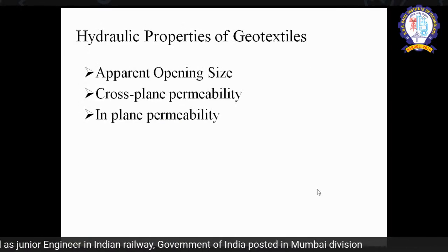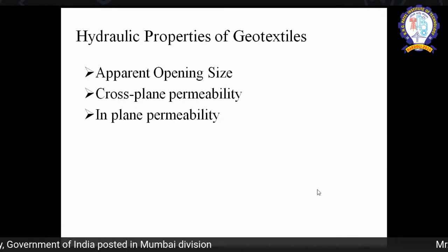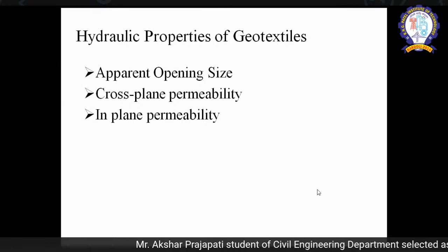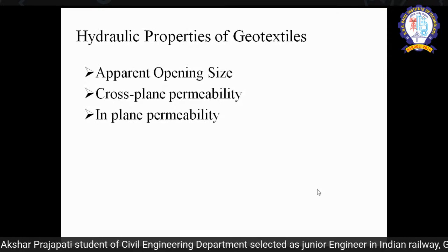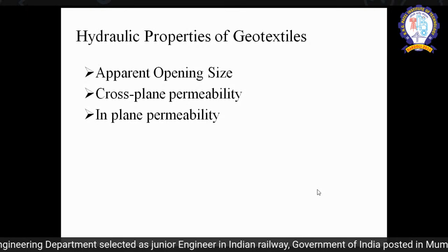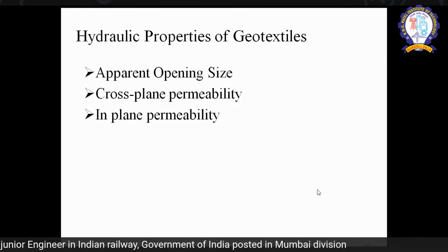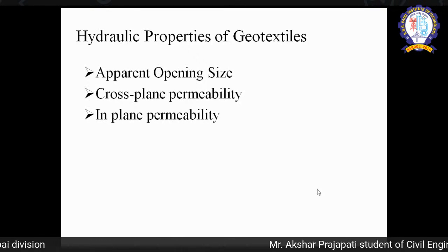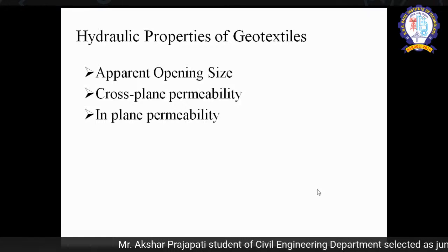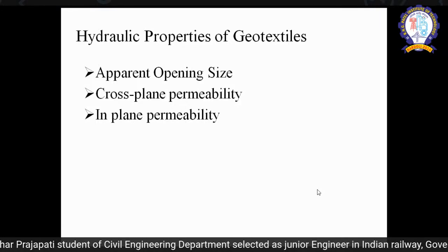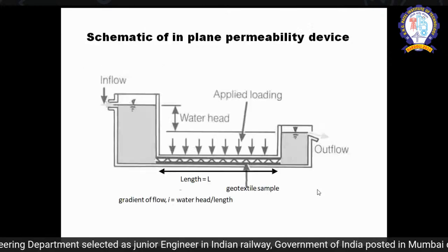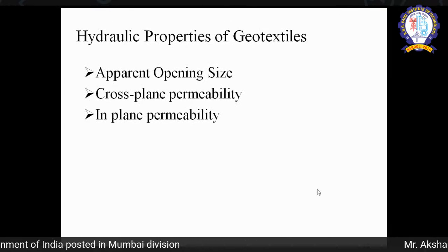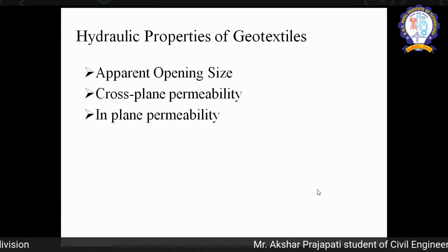Hydraulic properties are very important because we need to check how the material behaves with soil over time — whether water is being transmitted properly and whether clogging is not happening. The first hydraulic property is apparent opening size — similar to sieve analysis — which determines how water or soil particles pass through or are retained. The second important properties are cross-plane permeability and in-plane permeability, which determine how water flows through the geotextile laterally or normally.